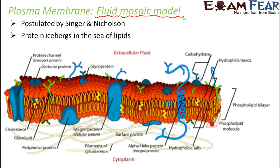Proteins are basically distributed in a mosaic fashion. Mosaic — you would have heard of doing mosaic on the floor. It is like a random distribution of colored stones on the floor — that is called mosaic. So here also, proteins are distributed randomly, neither on the surface nor completely below the surface. That is why proteins are distributed in a mosaic pattern, and that is why the term 'mosaic.'